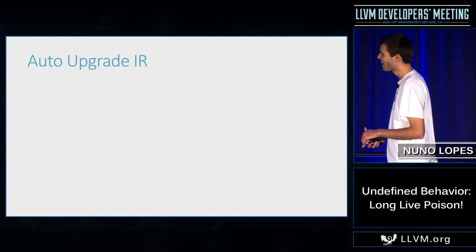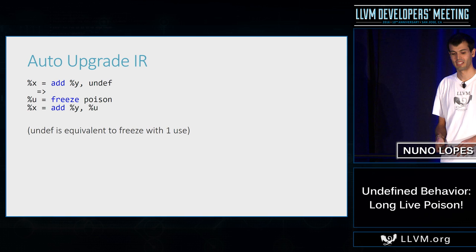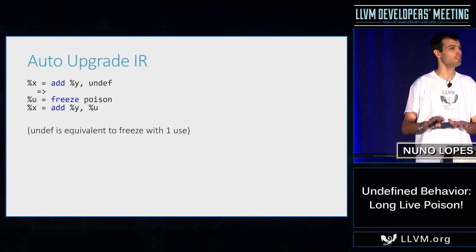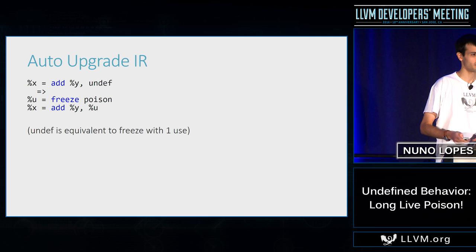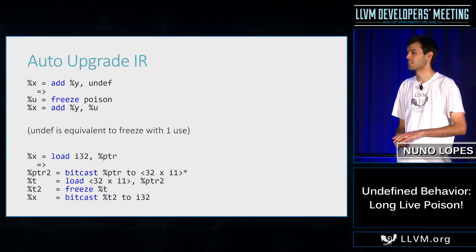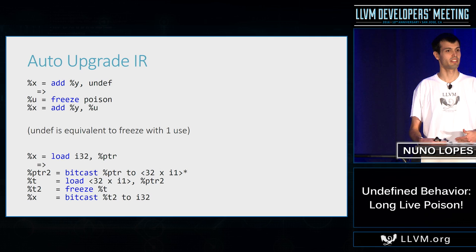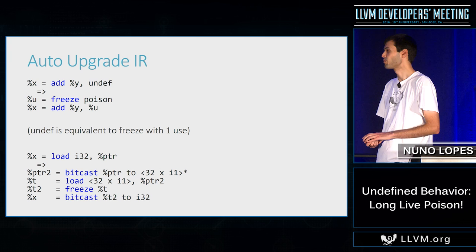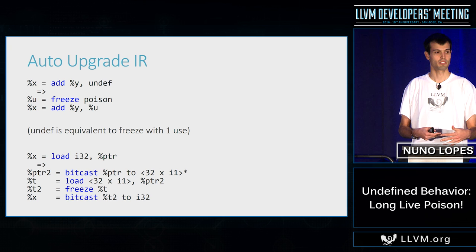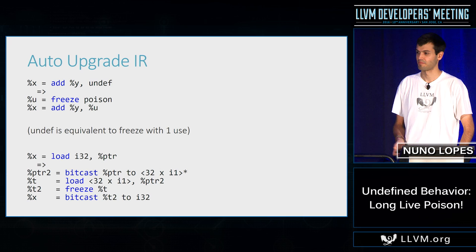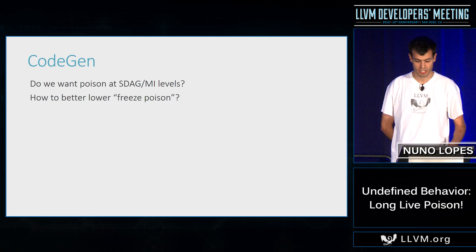Auto-upgrade is needed because we are killing undef. Undef is basically equivalent to a freeze of poison with one use, so we can just replace undef with freeze of poison. As Eli pointed out, load also needs to be patched with a sequence: since we don't have undef anymore, we need to load bit by bit, freeze the individual bits, then bitcast again. The auto-upgrade will look a bit scary, but we can optimize the sequence when we know the stored value is not poison.